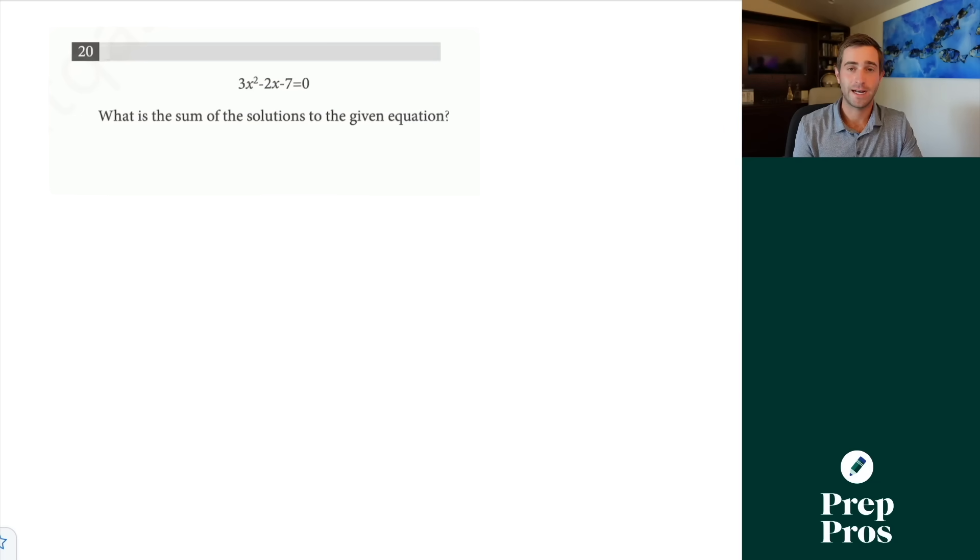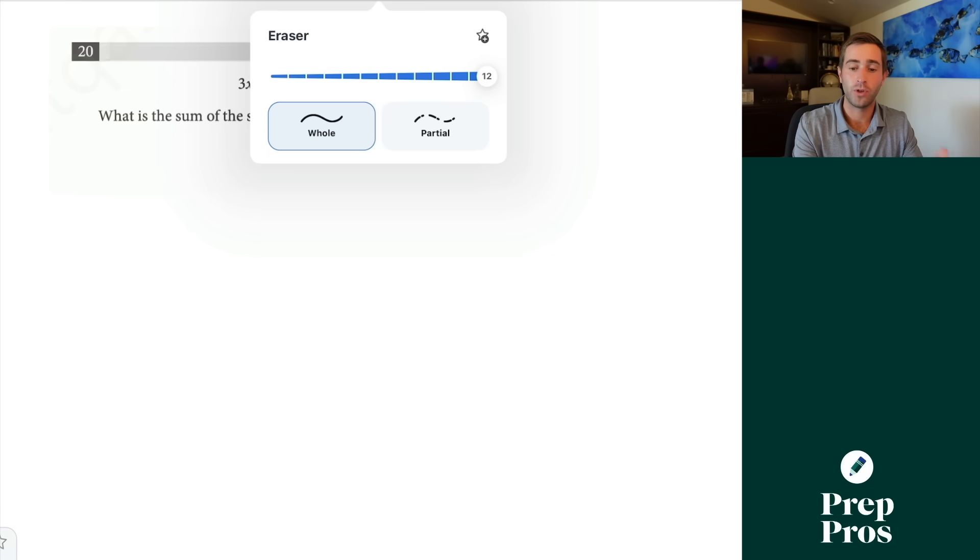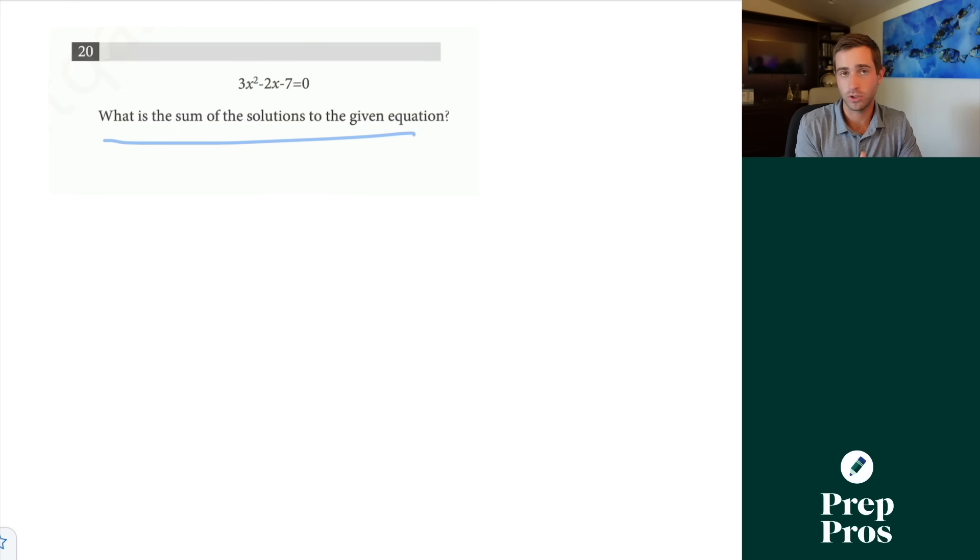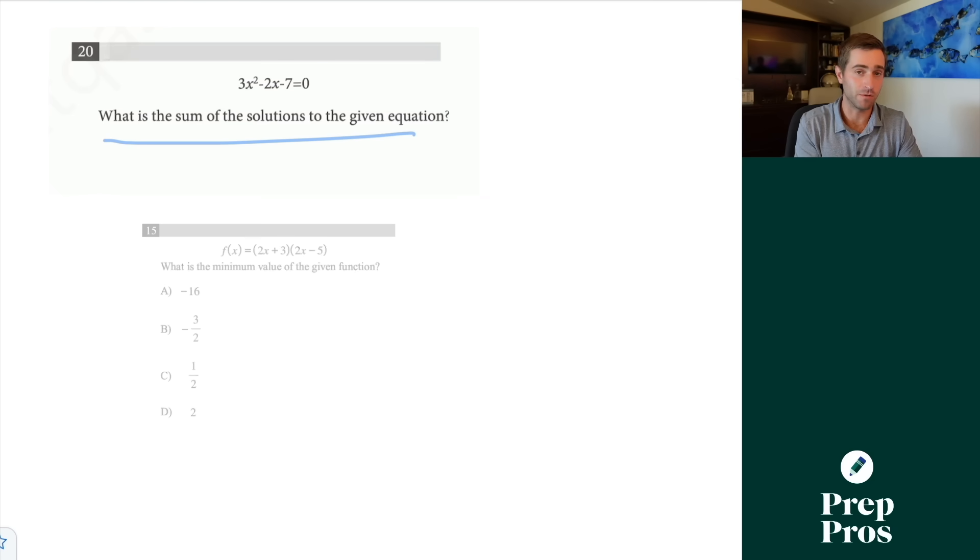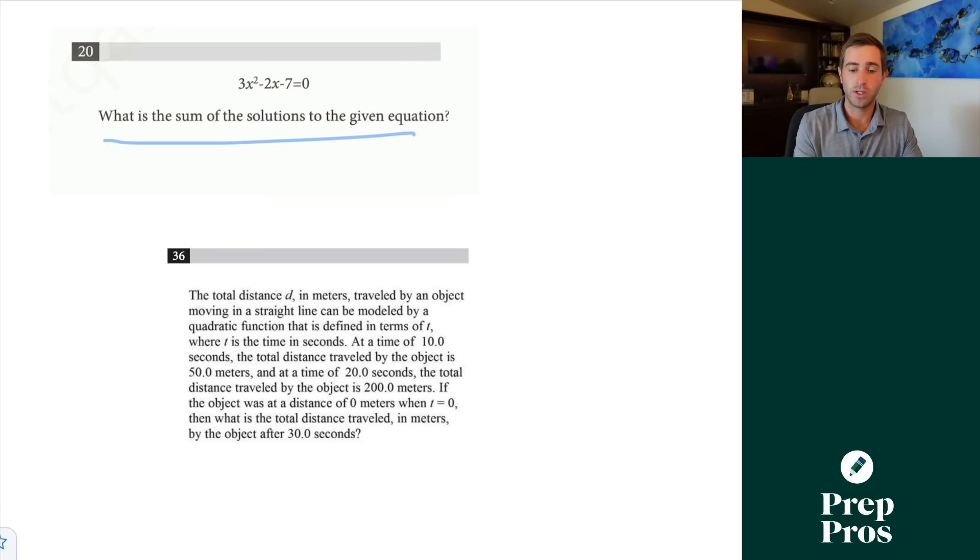Now the next thing you're definitely going to see on your SAT are advanced quadratic questions. It is probably the most consistent advanced question type that we'll see on the test. I don't know exactly which of these handful of question types you're going to see on your test, so we want to make sure you're prepped for all of them. They're going to typically be sum of solutions questions like we're looking at here. They're going to be discriminant questions. They're going to deal with maximums and minimums and vertexes, or they're often going to be word problems.